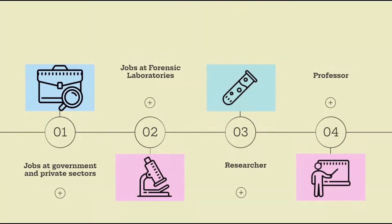The field of forensic science is extensive. You can find work in a variety of government and private industries. After completing your degree, you can open your own forensic practice and forensic service offices, work in forensic laboratories, detective offices, banks, government and private agencies, or become a researcher or professor. A trained forensic scientist may be hired by the Central Bureau of Investigation (CBI) and Intelligence Bureau (IB). There are endless opportunities in this field, and work prospects are virtually limitless — you can get work anywhere in India or abroad.